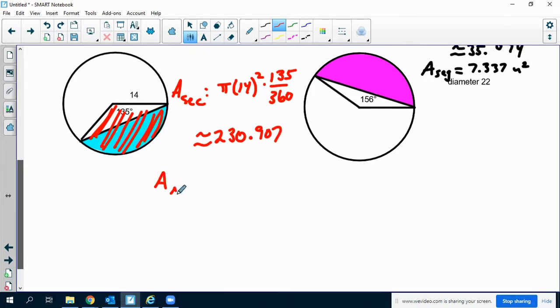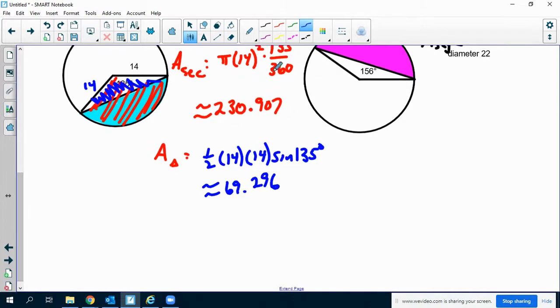And then the area of the triangle, well that's this. So that's going to be 1/2 times 14 times 14 times the sine of 135 degrees. That's about 69.296. And then what I will do is I will subtract those two things, and then that will get me the area of the segment. And the area of the segment is going to be about 161.611 units squared.